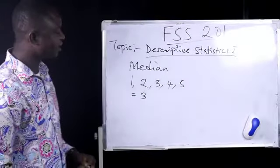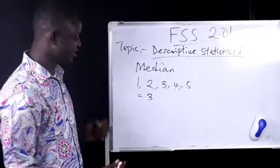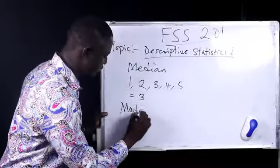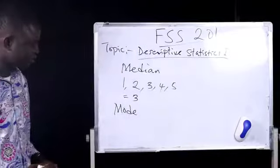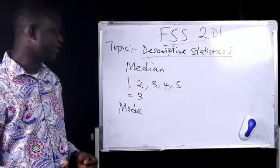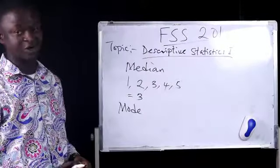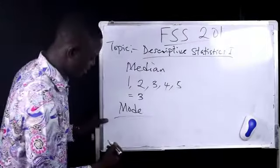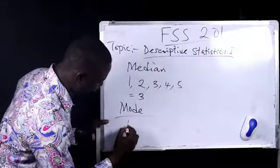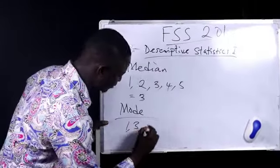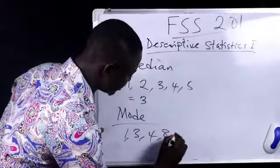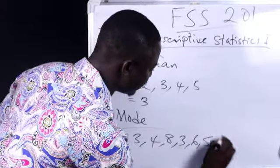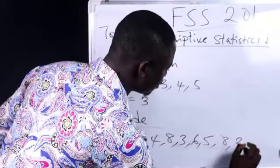And finally, under the measurement of central tendency, we have the mode. The mode which refers to the value that has the highest number of occurrence. So let's say we have a data spread of 1, 3, 4, 8, 3, 6, 5, 8, 2, 1.